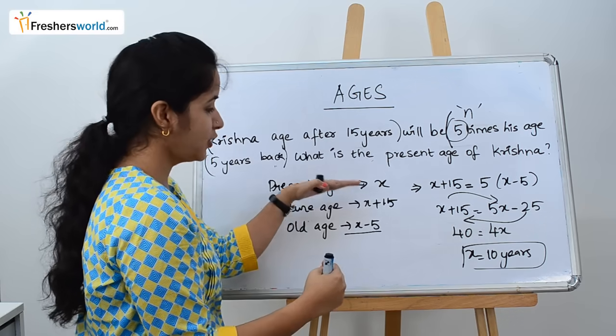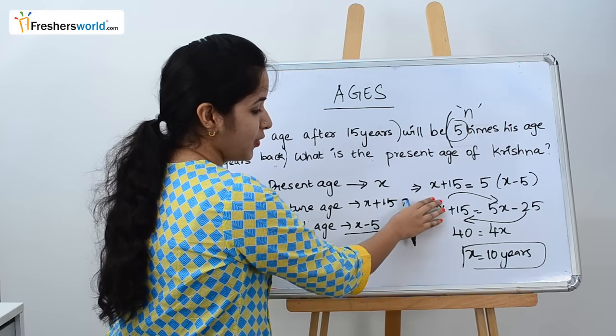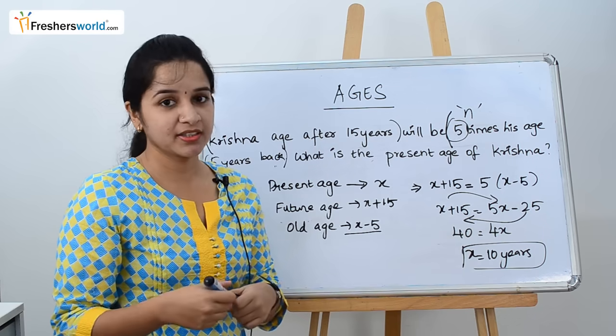If you segregate into present age, past age, and future age, it will be easy to find the equation. Once you know the equation, it's always easy to find X. Let's solve another question.